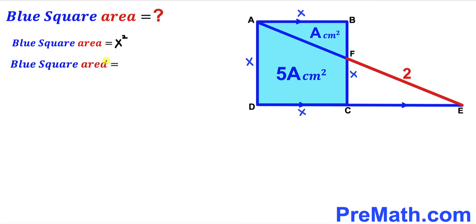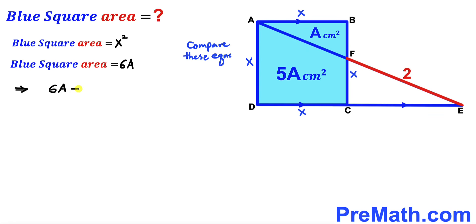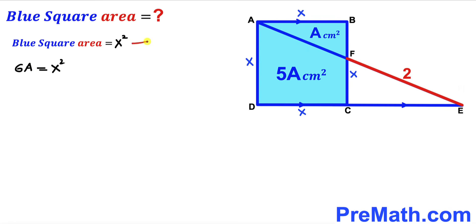So the blue square area equals 6A cm². Comparing these two expressions — both represent the area of the same square — we get x² = 6A. This is equation 1. Next, I'm going to label segment AF as y.